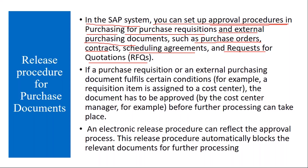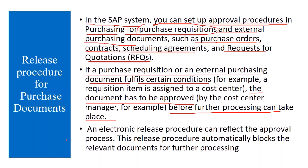This approval procedure can be applied to both purchase requisitions and external purchasing documents like POs, contracts, scheduling agreements, or quotations. If a purchase requisition or external purchasing document fulfills certain conditions — for example, if the PO value is more than 50,000 INR or USD — the document has to be approved before further processing can take place. Once approved by the respective people, you can then continue with further activities.